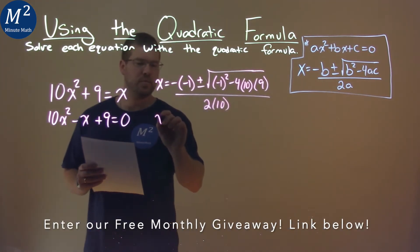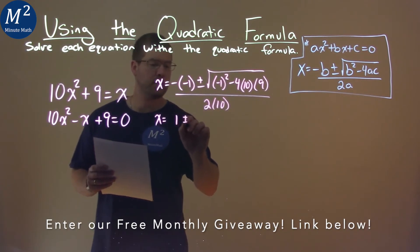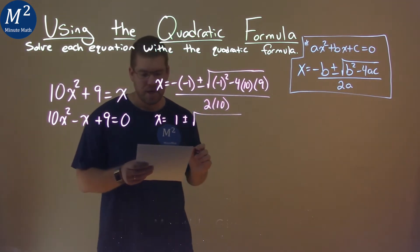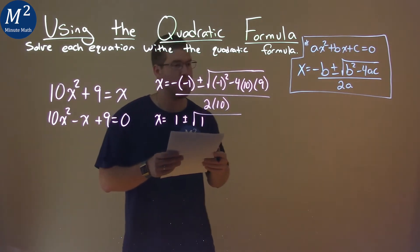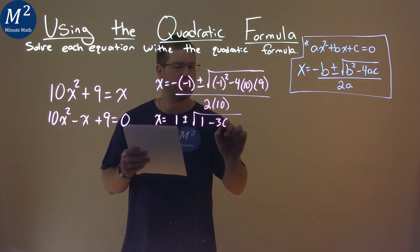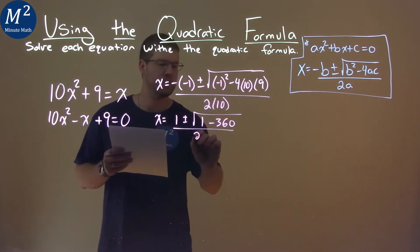Now I want to solve this. Let's break it down. Negative times negative 1 is positive 1, plus or minus the square root. Negative 1 squared is a positive 1. 4 times 10 times 9 is 360, so you have minus 360 here, all over 2 times 10, which is 20.